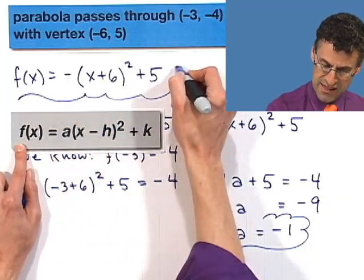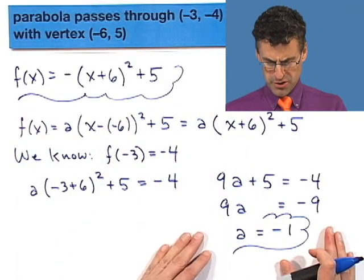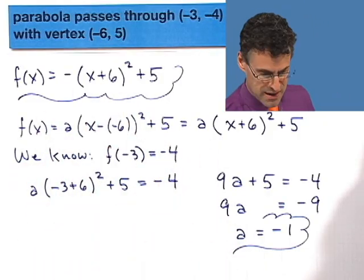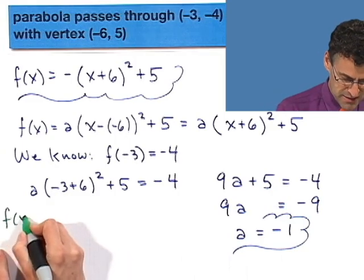So that describes exactly the parabola, but suppose we wanted to see this in general form. All we have to do for general form is just to kind of foil that out, expand that out a little bit and make it all pretty. So if we want to do that, here's what we get. F of x equals...